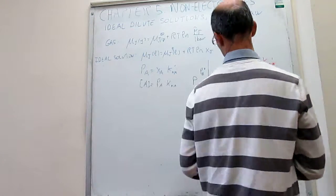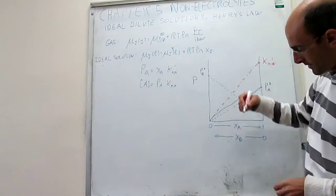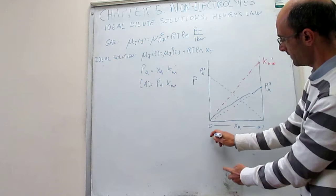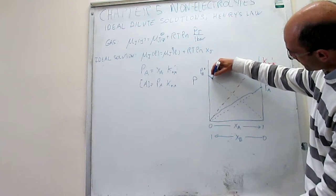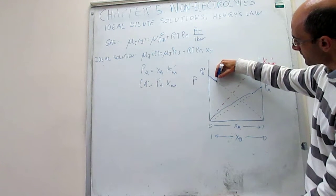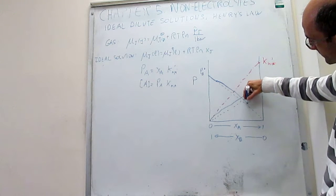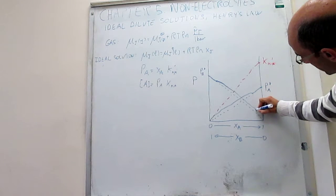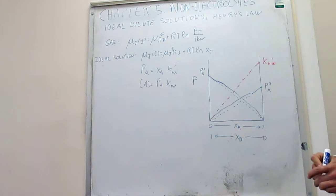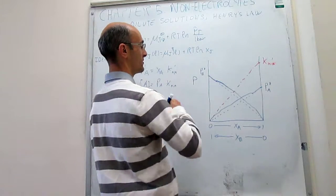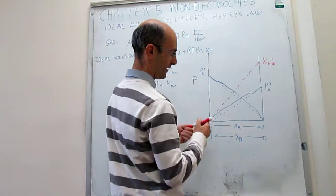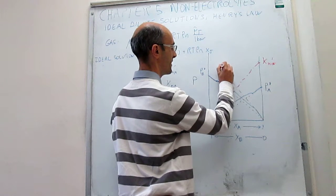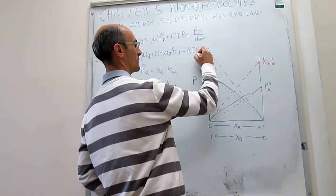If B behaves the same way, then Raoult's law will be satisfied at high concentrations of B — notice that high concentrations for B run from 0 to 1 on the mole fraction axis. When you get to a critical point it deviates, and at low concentrations Henry's law is satisfied. Henry's law gives another direct proportionality between the pressure and the mole fraction, which extrapolates to the pressure axis as a dash-dot line — that is Henry's law constant for B.